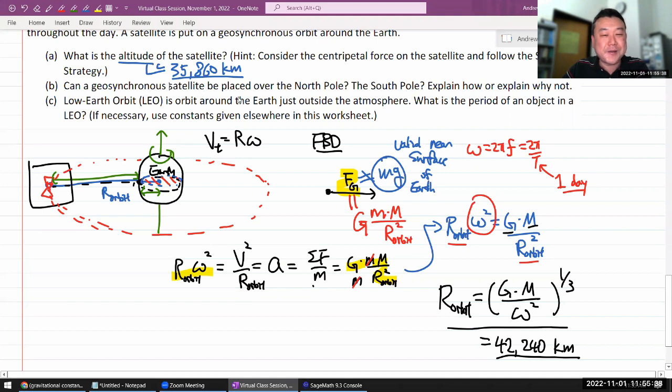So can a geosynchronous satellite be placed over the North Pole, South Pole? I think the intended answer here is no. The way I was explaining how you can only place it over the equator. But I think in aerospace engineering, there's a word that they use for things that are like in this orbit, but over the poles. There are satellites on that trajectory, I think. Don't think they call it geosynchronous. I'm not sure what they call it.